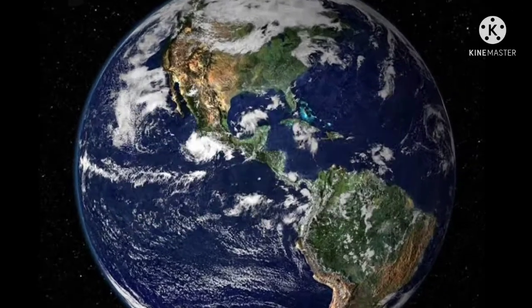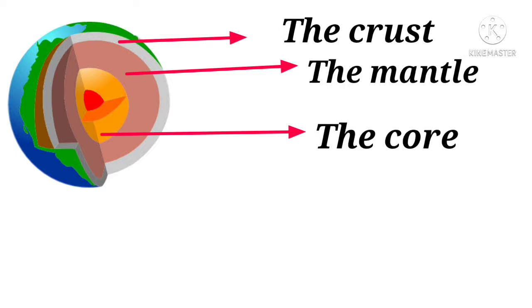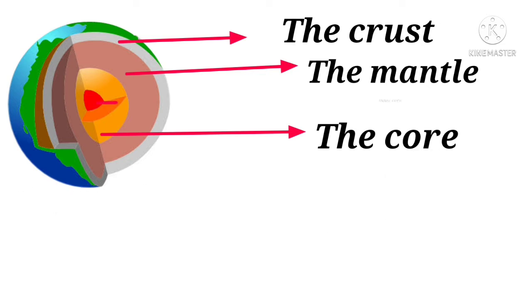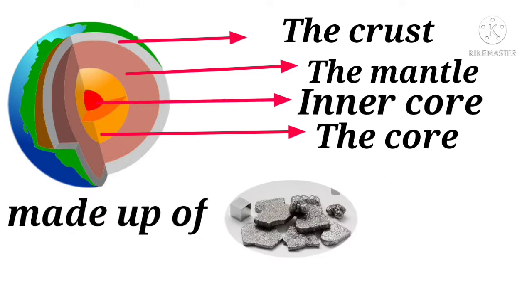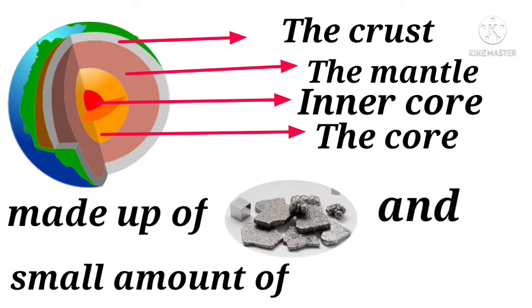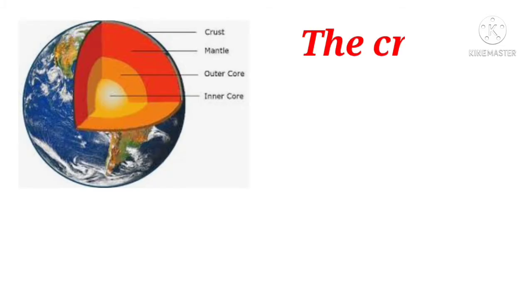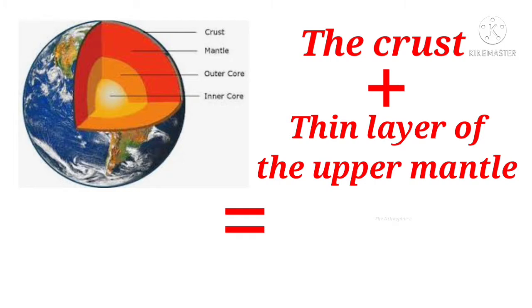Third is the core, the center of the Earth. The liquid outer core is a mixture of iron and nickel. The solid inner core is made up of 80% iron and a small amount of nickel. It is the hottest part of the Earth. The crust and the thin layer of the upper mantle together form the lithosphere.